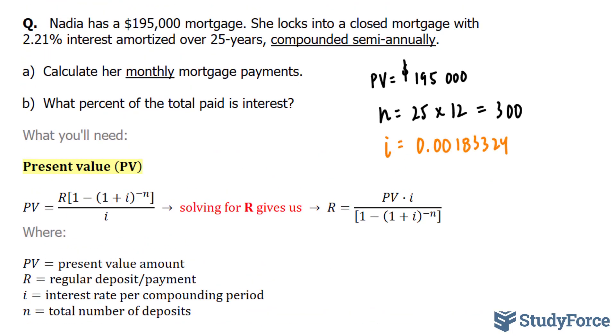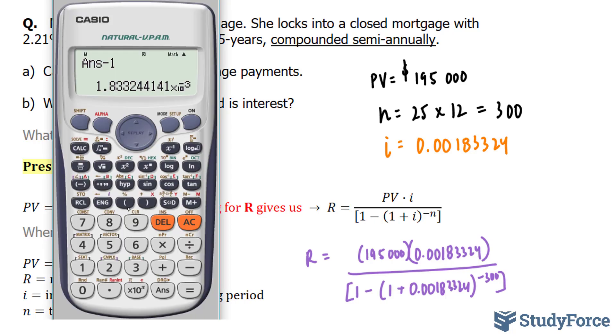Now we have all the information we need to plug it into our present value formula. We're going to be using this one, so R is equal to this number times this number, all divided by bracket 1 minus 1 plus, once again that, to the power of negative 300.